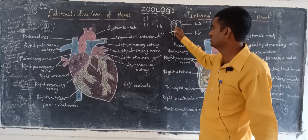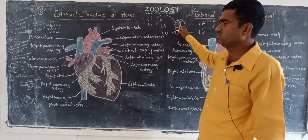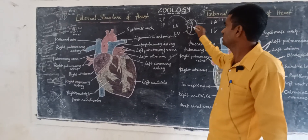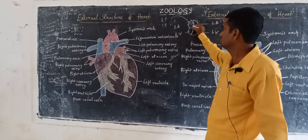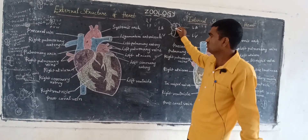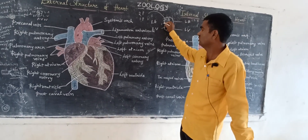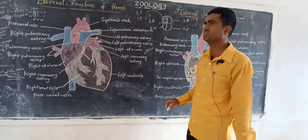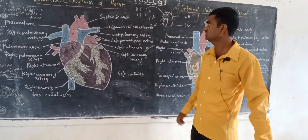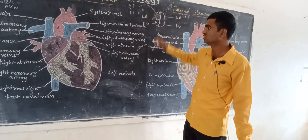The inferior vena cava is guarded by the Eustachian valve. So likewise, the Thebesian valve and Eustachian valve are present in the right atrium.